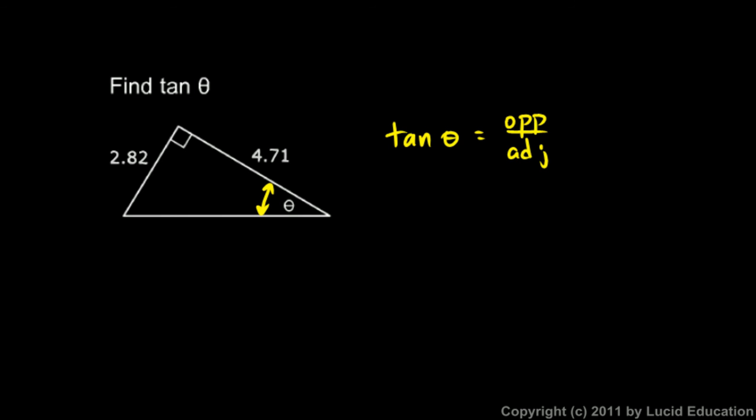So here's angle theta. The side that is opposite theta is 2.82. And the side that is adjacent is 4.71. So 2.82 divided by 4.71, you do that on the calculator and you get 0.599.